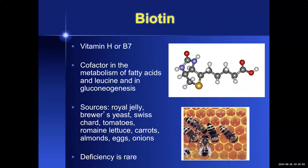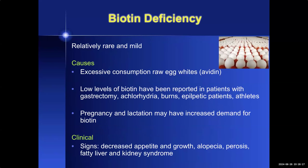Our fourth group of disorders are those responding to biotin, an important cofactor in the metabolism of fatty acids and leucine and in gluconeogenesis. Dietary sources include royal jelly, Swiss chard, tomatoes, almonds, eggs, and onions. Causes of biotin deficiency include excessive consumption of raw egg whites containing avidin, patients with decreased intake such as post-gastrectomy patients, or those with increased metabolic demands such as burn patients, epileptic patients, athletes, and pregnant or lactating women. Clinical signs include decreased appetite and growth, and uniquely alopecia, perosis, and fatty liver and kidney.